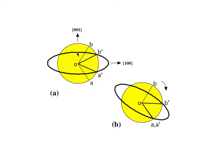If we take the ellipsoid and apply a rigid body rotation so that one of those two sets of lines comes into coincidence, then we have recovered one coherent line. That is illustrated where OA and OA′ are exactly equal in length and pointing in the same direction. So if we combine the Bain strain with a rigid body rotation, that amounts to an invariant line strain — meaning we have left one line unrotated and undistorted.